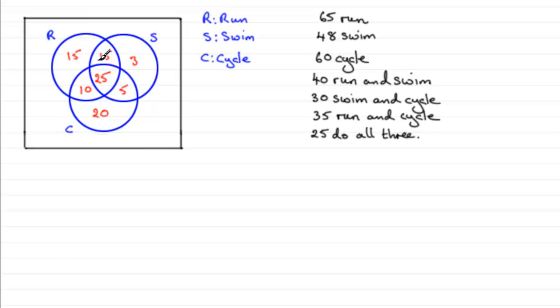We mustn't forget we know that the total of this comes to 100. There could be people who do nothing. And if you add up everything that you've got in all of these circles, you'll find that it comes to 93, so that leaves us with 7 that clearly don't do anything.